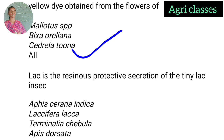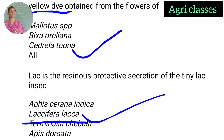Lac is the resinous protective secretion of the tiny lac insect. We collect lac from the insect. The options are Episyrphus indica, Laccifer lacca, Terminalia chebula, and F. dosata. The correct answer is Laccifer lacca. From this insect we collect lac — first as stick lac, then convert to button lac, and prepare different lac products.